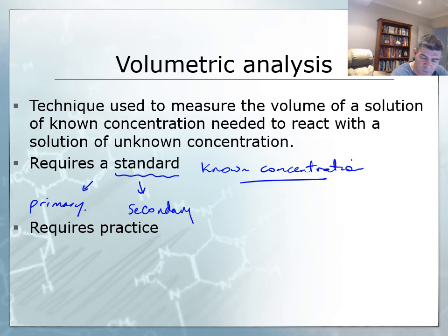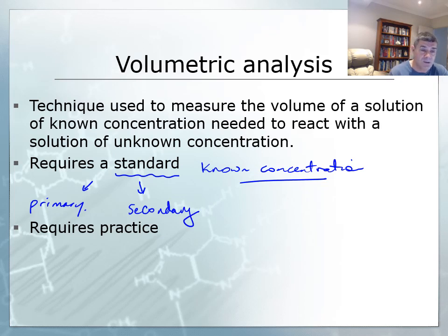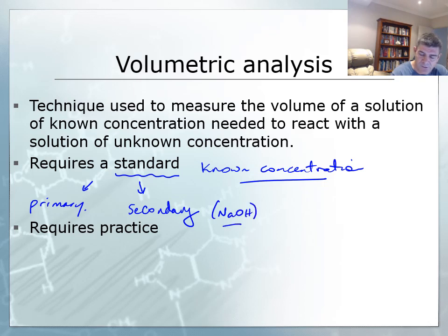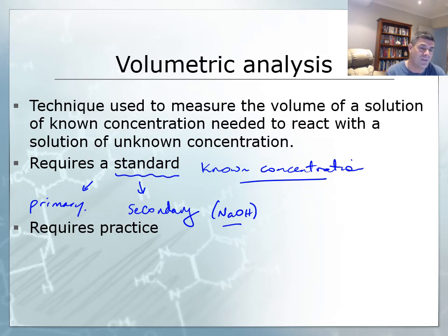In fact, often we will use a primary standard — often an organic acid such as tartaric acid, potassium hydrogen phthalate, or oxalic acid — in order to standardize a solution of sodium hydroxide. And then, of course, if we use that solution to titrate against an unknown acid solution, we will know the concentration of the sodium hydroxide, and therefore we can calculate the concentration of the unknown.